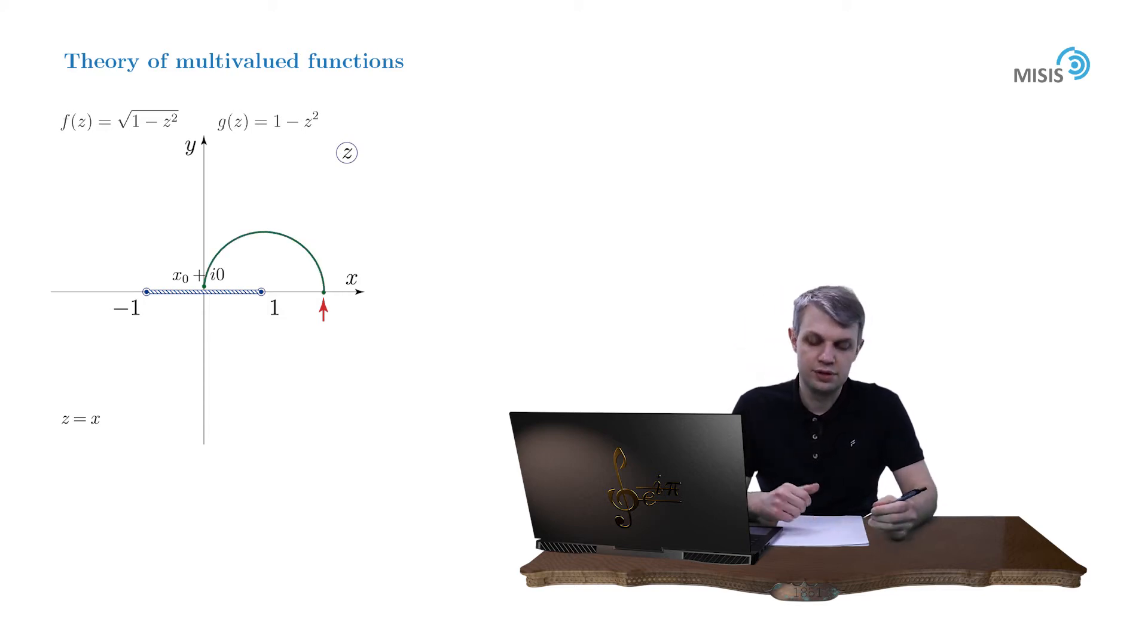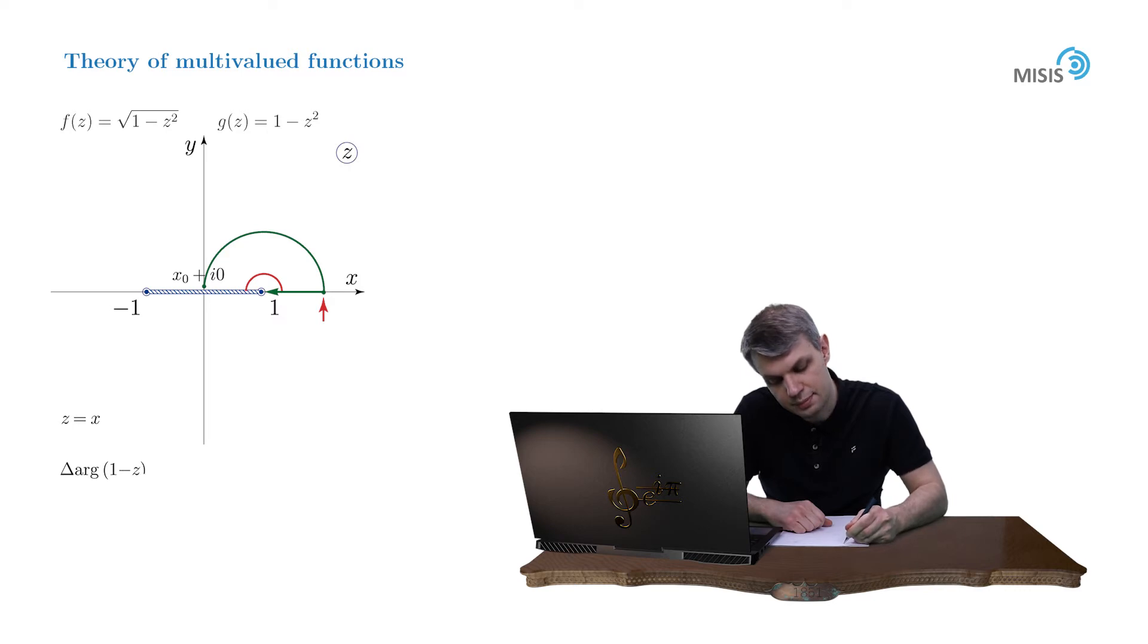And again we trace the changes of the arguments. Arrow 1 minus z rotates by angle pi in the clockwise direction, so the corresponding change of the argument is minus pi.